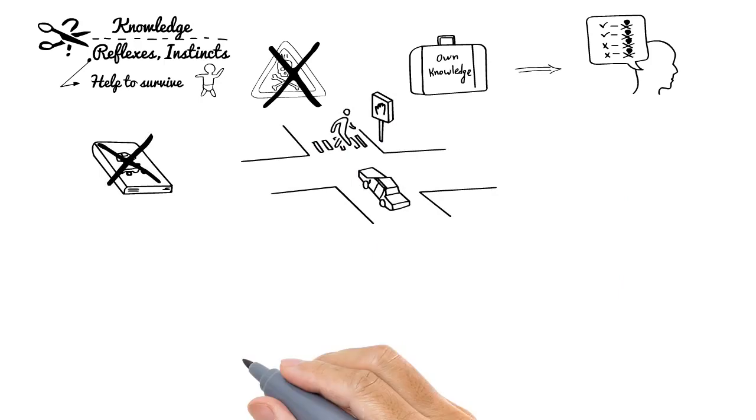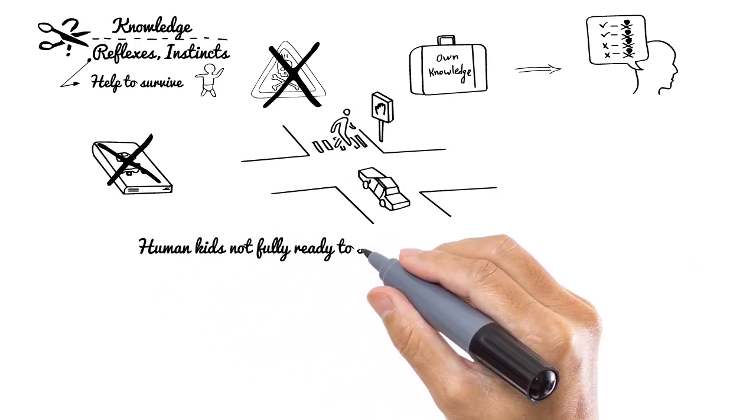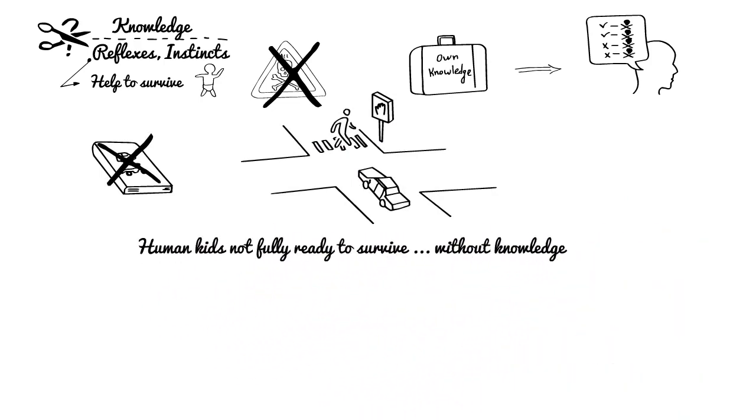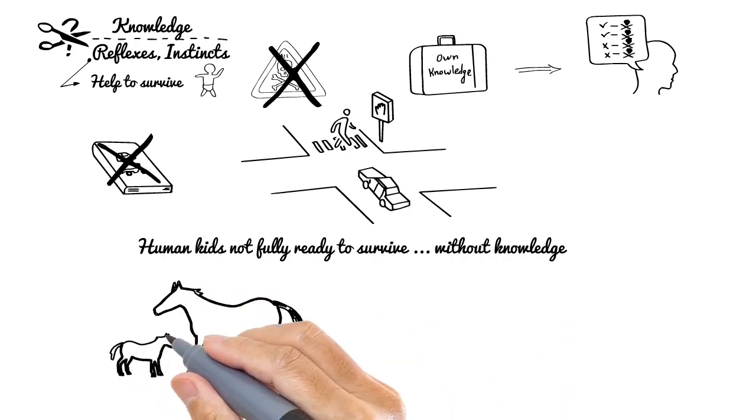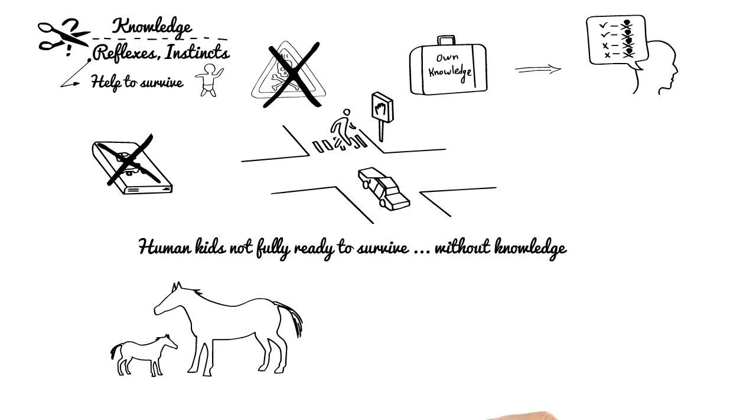Another example: Humans give birth to kids who are not fully ready to survive without gaining knowledge. Look to the animals - they have much stronger genetic memory. For example, most of the animals can walk almost right after birth. Humans are not.